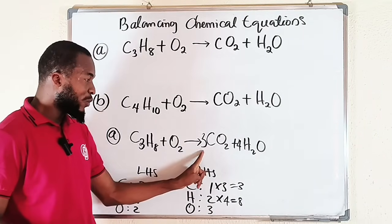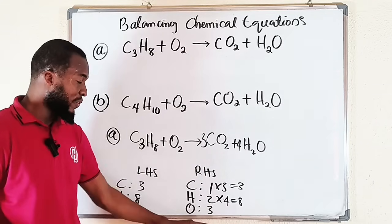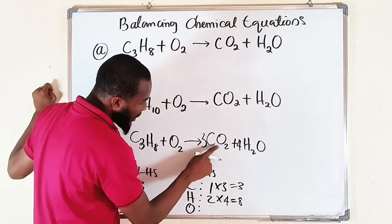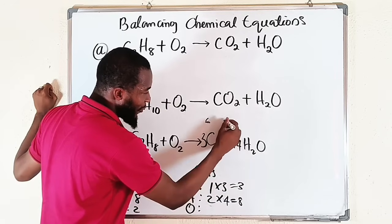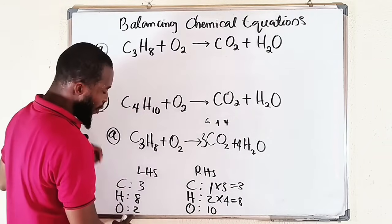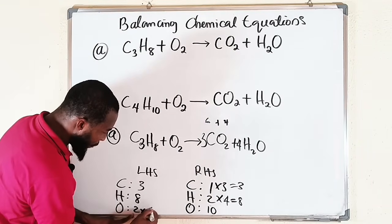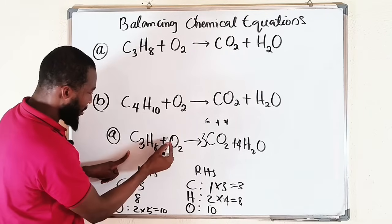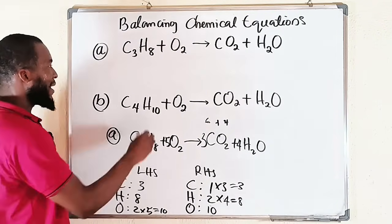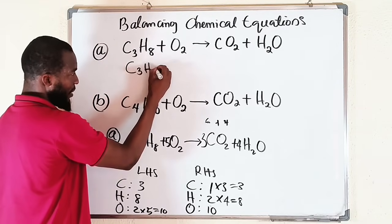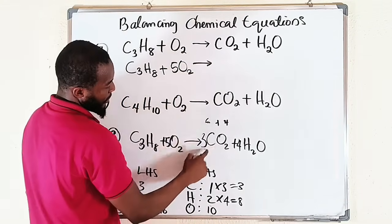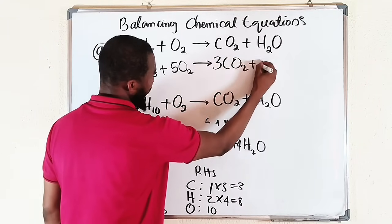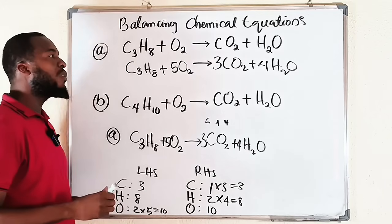Now for oxygen: since we've added coefficients, the oxygen count has changed. From 3 CO₂ we get 3×2 = 6 oxygen atoms, and from 4 H₂O we get 4×1 = 4 oxygen atoms, making 10 altogether on the right. We only have 2 on the left, so we multiply O₂ by 5 to get 10. Everything is now balanced: C₃H₈ + 5O₂ → 3CO₂ + 4H₂O.